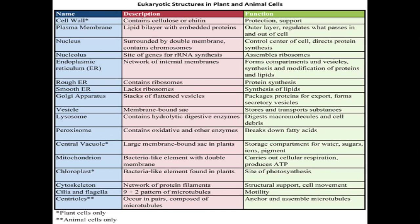It's important to know the different organelles in Eukaryotes and to know which ones are in plant cells and which ones are in animal cells. The cell wall, the central vacuole, and the chloroplasts are only found in plants, whereas centrioles are only found in animals, and the rest of the organelles are found in both. The cell wall contains cellulose or chitin and it protects and supports — only found in plants.